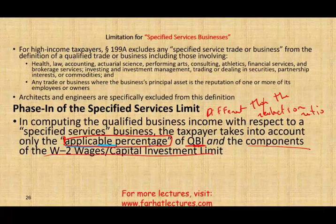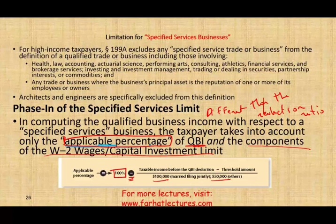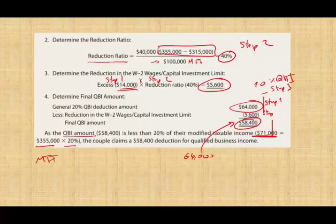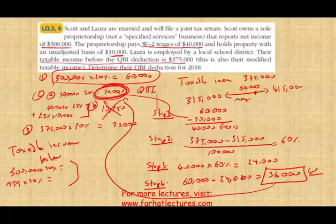Here's how to compute the applicable percentage: 100% minus [(taxable income before QBI − threshold) ÷ $100,000 (if married filing jointly) or ÷ $50,000 (single/other filers)]. Once we compute the applicable percentage, we then go through those same four steps we used earlier for non-SSBs. So basically there are two parts: first find the applicable percentage, then go through the four-step limitation. Let's work through some examples to see how this works.